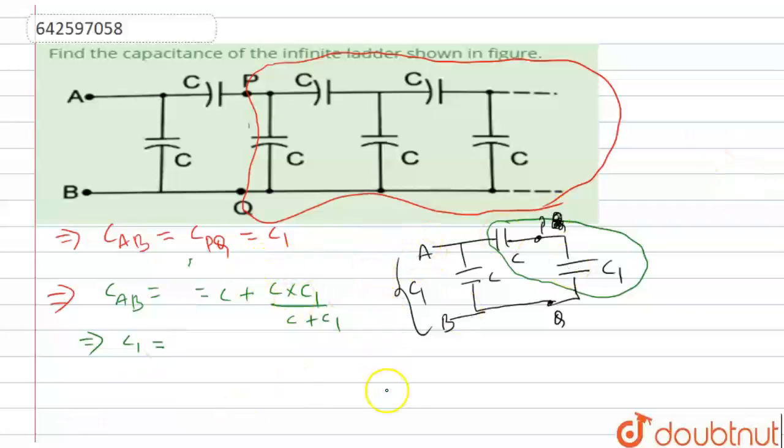So it will be 1 upon C1, not C. Okay, so it's going to be C1. So 1 upon C1 is going to be C plus C into C1 upon C plus C1. So when you solve this, you will be getting the equation as